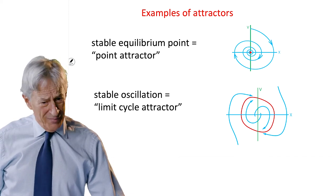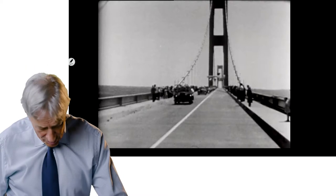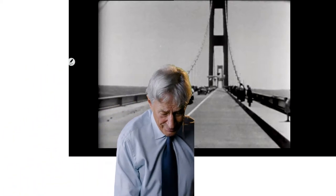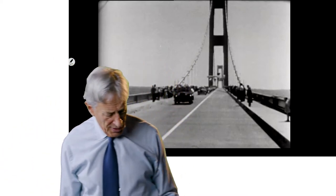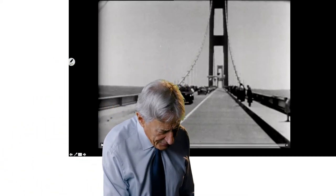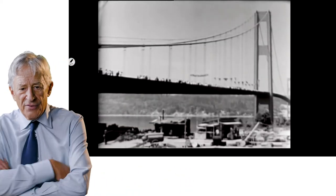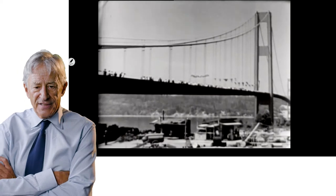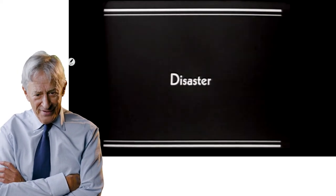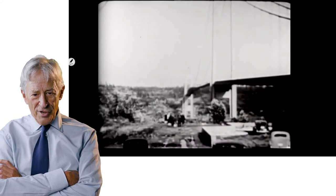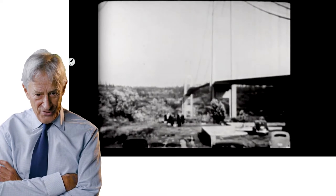It was a limit cycle attractor that brought down the Tacoma Narrows Bridge. Maybe you've seen this footage. But shortly after the bridge opened, here in the early 1940s, disaster happened, the bridge started to go into large oscillations.